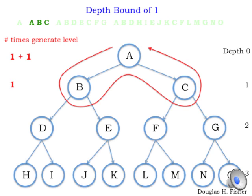At depth bound one, we repeat the work from before. We expand the node at depth zero yet again. We also visit its children at depth one: B and C. You can see off to the left there's a running total of the number of times we're visiting nodes at the various levels.